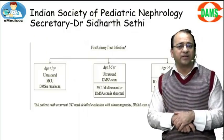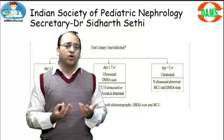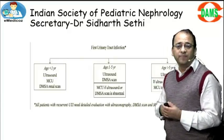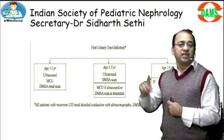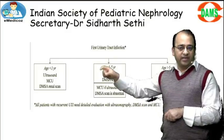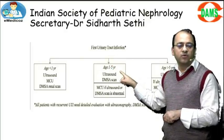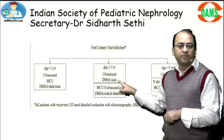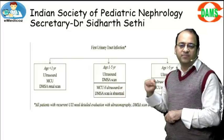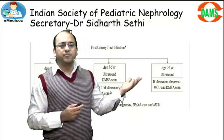As secretary of the Indian Society of Pediatric Nephrology, we gave guidelines in 2011. Every infant under one year with UTI should get all three tests: ultrasound, MCU, and DMSA — this is a very important MCQ. Between one to five years: ultrasound and DMSA at eight weeks; if abnormal, add MCU. After five years: ultrasound only, then other tests if abnormal.